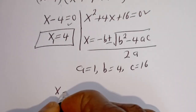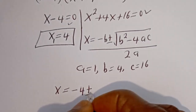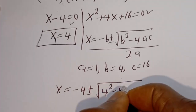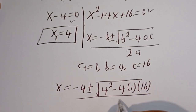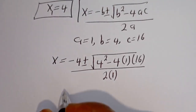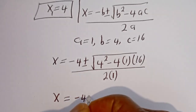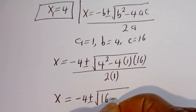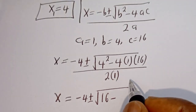Now, s is equal to minus 4 plus or minus square root of 4 squared minus 4 multiplied by 1 multiplied by 16, over 2. That gives us s is equal to minus 4 plus or minus square root of 16 minus 64.